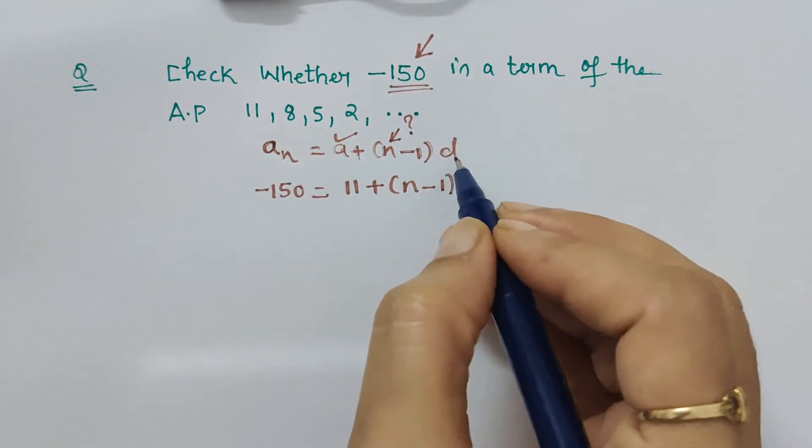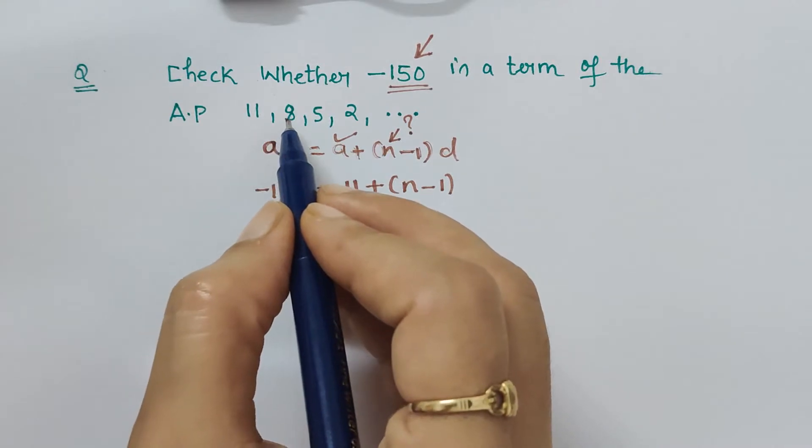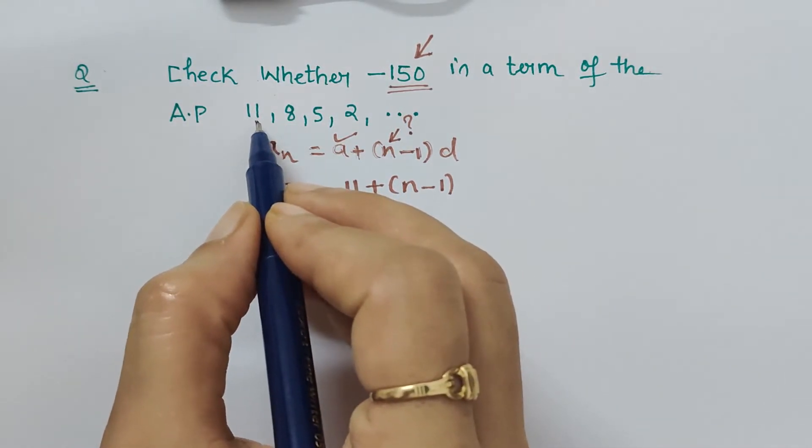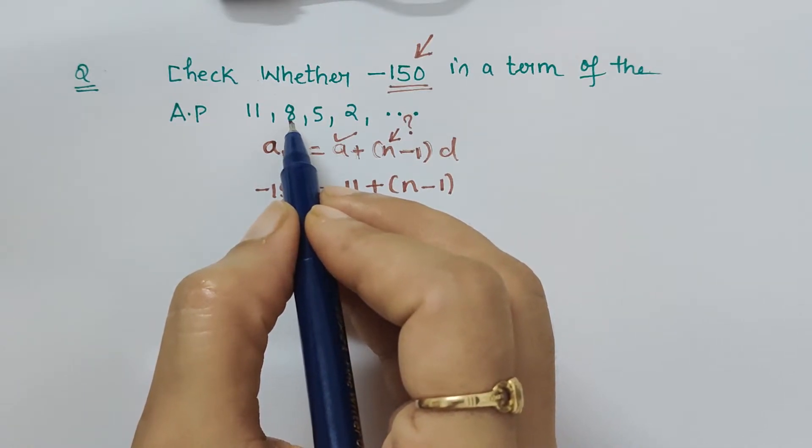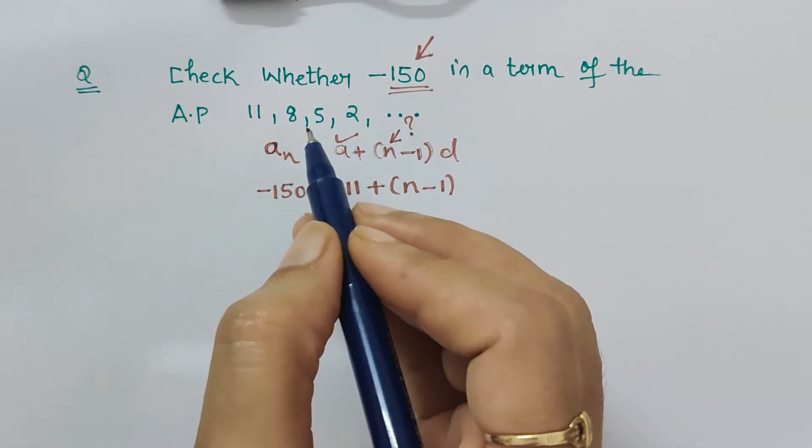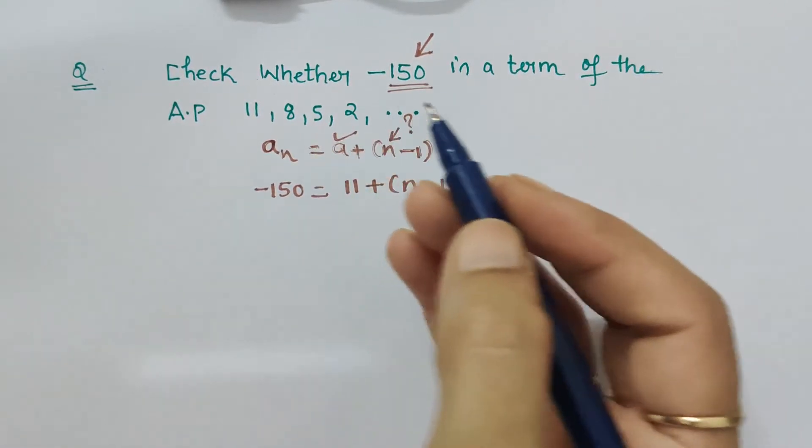n minus 1 into d, where d is the common difference. That means second term minus first term is the common difference, or third term minus second term. So 8 minus 11 is -3.